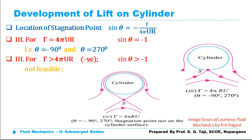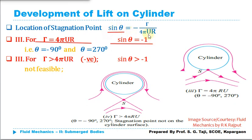Case 3: γ = 4πr. In this case, γ/(4πr) = 1, so sin(θ) = −1. The value of sin(θ) equals −1 only when θ = 270° (or equivalently −90°). Therefore, when the constant circulation equals 4πr, the stagnation point is located at exactly θ = 270°. There is only one stagnation point in this case.